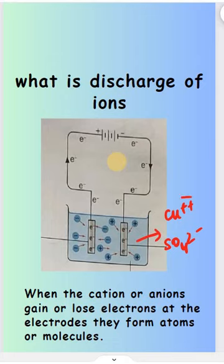They have extra positive charge, which means the ion has lost two electrons. So now it needs to discharge, meaning it needs to gain the two electrons at the cathode. When the cation and anion lose or gain electrons and form atoms or molecules, that is called discharge.